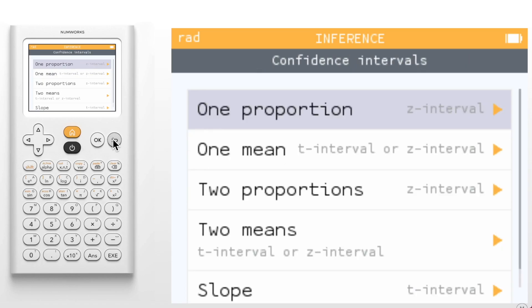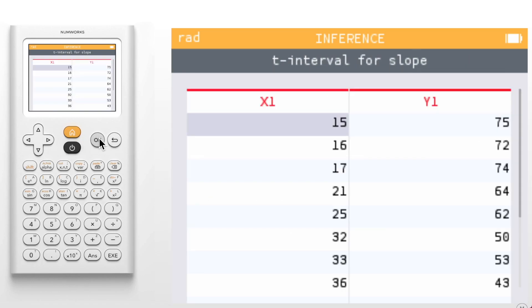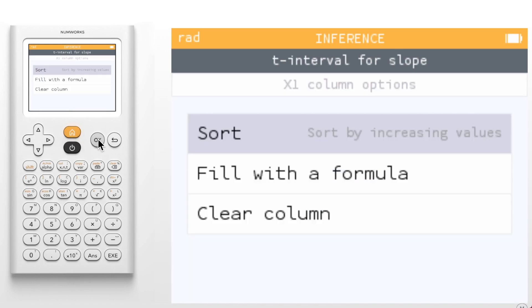We have also added support for inference on the slope. When performing inference on the slope, you'll notice that the test will pull the data set from the regression application using the values in x1 and y1. If no values have been entered, they can be inputted directly within the test, and you can also clear out a data set if needed.